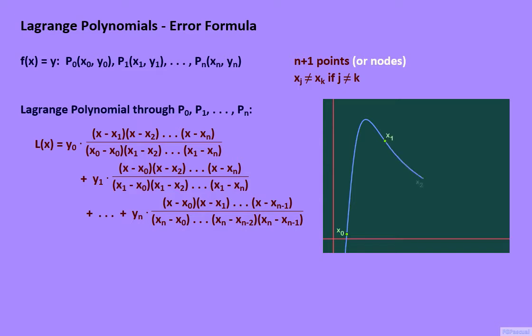The graph of f might look like the curve that's given on the right, with the different nodes P₀ through Pₙ indicated by their respective x-coordinates. The graph of the Lagrange polynomial should pass through the very same nodes.